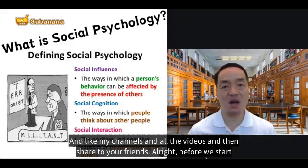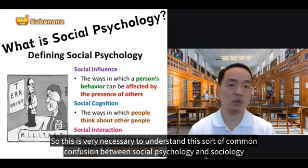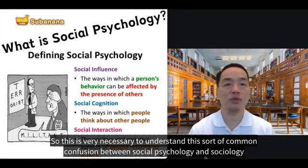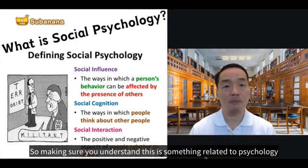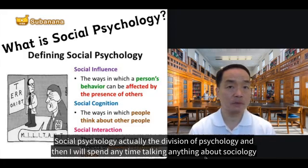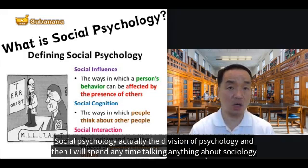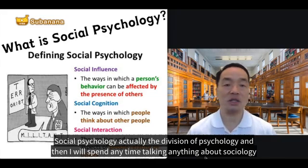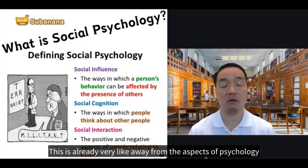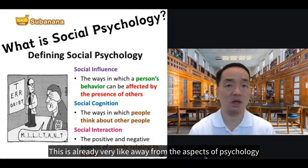Before we start, it's very necessary to understand the common confusion between social psychology and sociology. Make sure you understand that social psychology is something related to psychology — it is actually a division of psychology. I won't spend any time talking about sociology because it is already very far from the aspects of psychology.